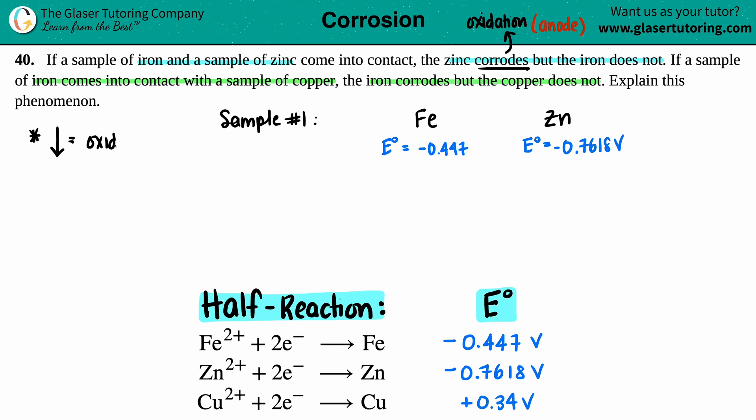Oxidation is where the corrosion happens. So the key here is that you want to see which one is the lower amount. Well, out of the iron and the zinc, -0.7618 volts is lower than -0.447.